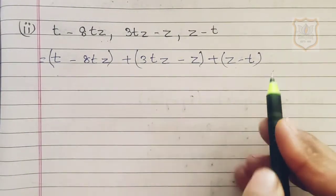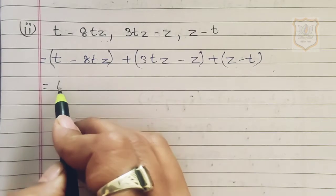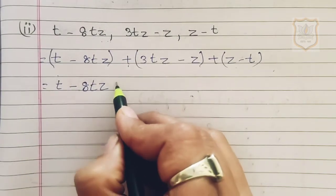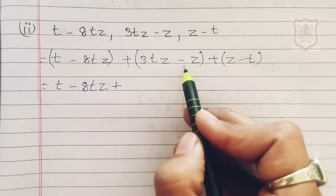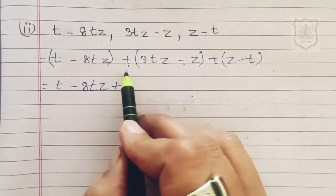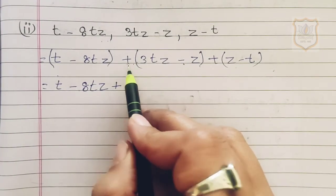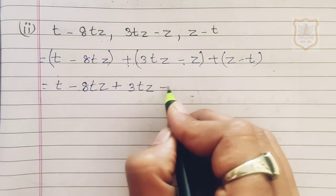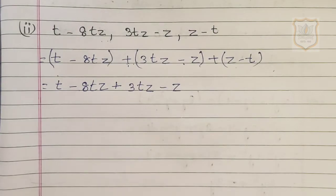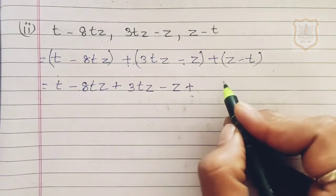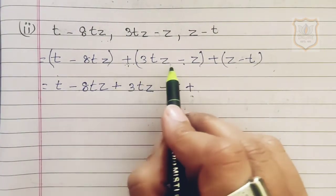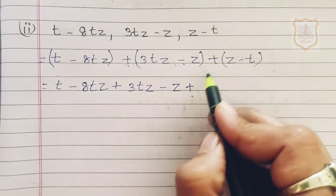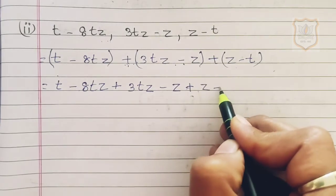We open the brackets. Since a plus sign is in front of each bracket, the signs inside do not change when we open them. Remember: only when there is a minus sign in front of a bracket do the signs inside change. So we write: t minus 8tz plus 3tz minus z plus z minus t.